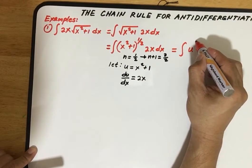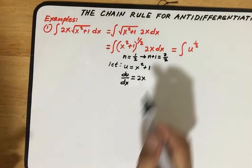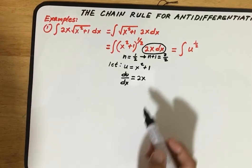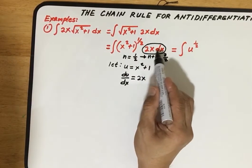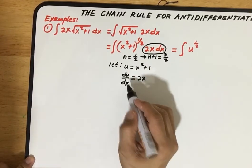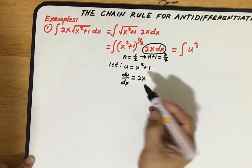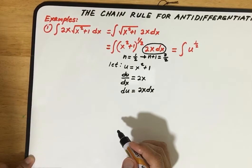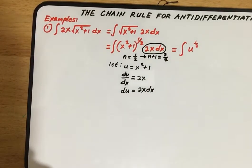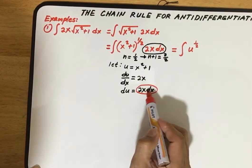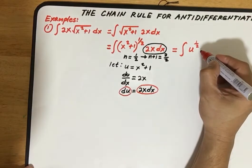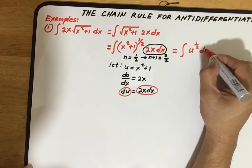The exponent is 1/2, and we need to replace the remaining part containing the differential with du. If we multiply both sides by dx — or just cross-multiply — we get du is equal to 2x times dx. Looking at the integrand, this 2x dx is exactly that expression, so we can replace it with du. Rewriting, we now have the integral of u to the 1/2 du.